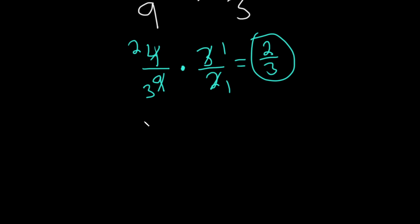Now if that was confusing and you didn't like that, let me show you another way. So this is 4 ninths times 3 halves. Let's just say that you said, I don't want to simplify anything. 4 times 3 is 12, 9 times 2 is 18.